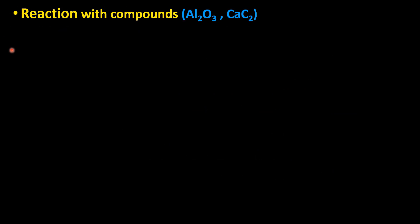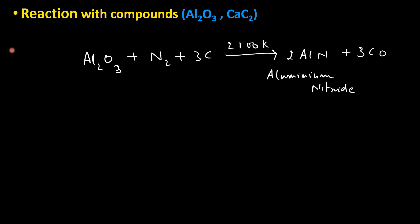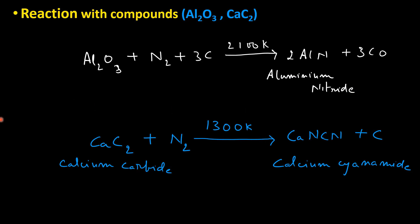Reactions of nitrogen with compounds: Nitrogen combines with alumina in the presence of carbon at very high temperature to give aluminum nitride and carbon monoxide. Similarly, calcium carbide reacts with nitrogen at 1300 Kelvin to give calcium cyanamide (CaCN₂).